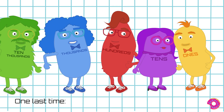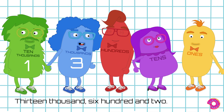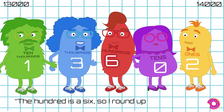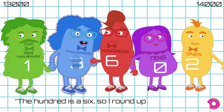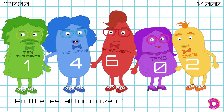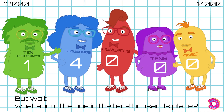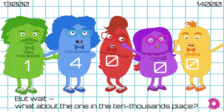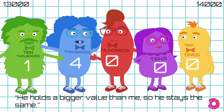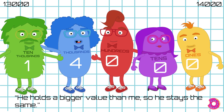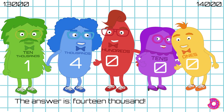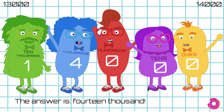One last time. Thirteen thousand, six hundred and two. The hundred is a six, so I round up, and the rest all turn to zero. But wait — what about the one in the ten thousands place? He holds a bigger value than me, so he stays the same. The answer is fourteen thousand.